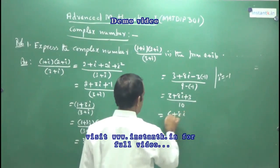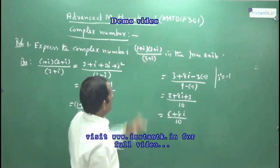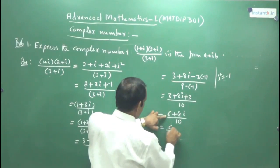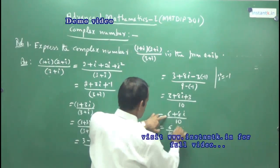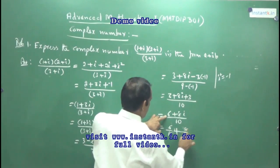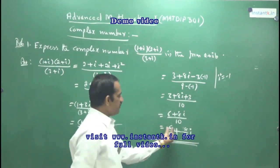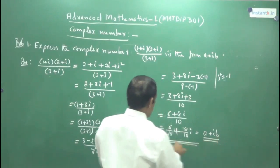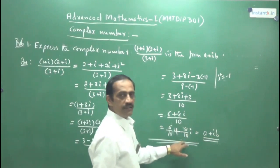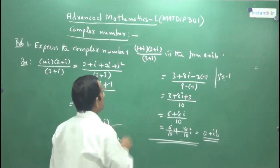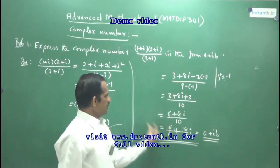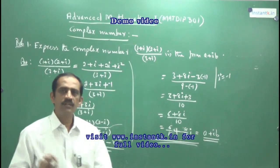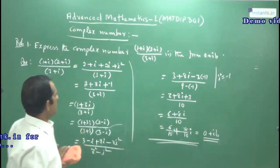So the total is (6+8i)/10. To write in the form a+ib, separate the terms: 6/10 + (8/10)i. This complex number is now in the standard form a+ib, where a = 6/10 and b = 8/10. That is the answer. So when asked to write a complex number in the form a+ib or x+iy, you follow this method.